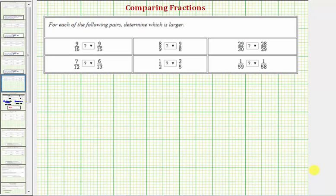Here we want to compare 9/16 and 9/15. Notice how the denominator determines how many partitions one whole piece is divided into. Since 15ths are larger than 16ths, we should be able to recognize that 9/15 is greater than 9/16, or 9/16 is less than 9/15. But we'll go ahead and show the process anyway.